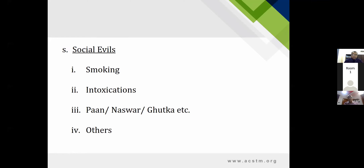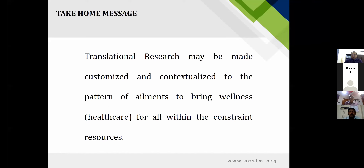There are certain social evils that are not less than diseases, prevalent in Pakistan and the surrounding area: excessive smoking, especially among the young and increasingly among women, intoxications of various materials, and locally paan, naswar, gutka — substances people chew, take, or sniff — leading to health complications.